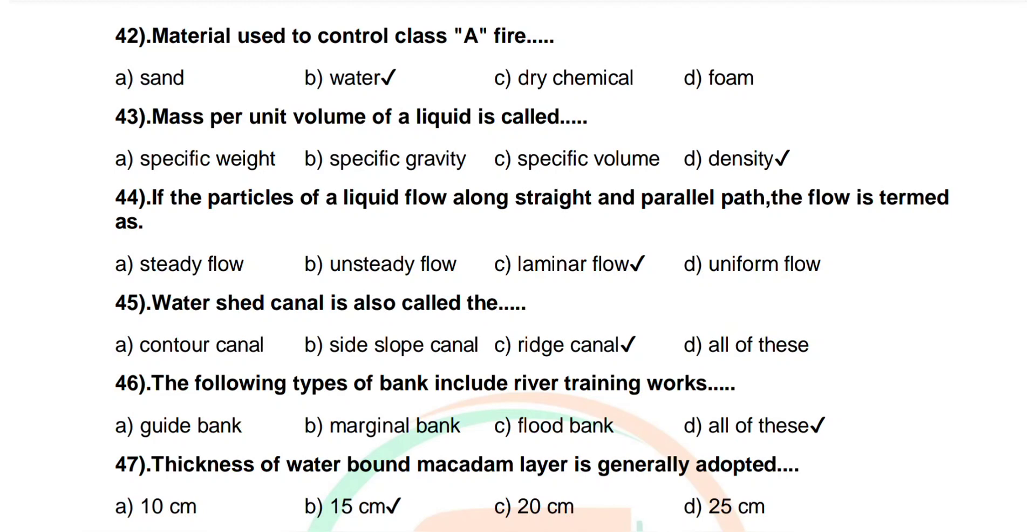Question number 45: Watershed canal is also called the. Options are contour canal, side slope canal, ridge canal, all of these. Correct answer: ridge canal.